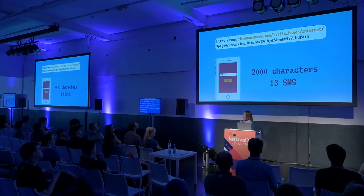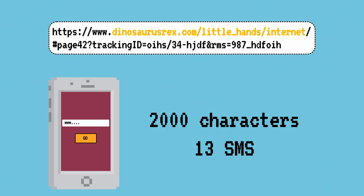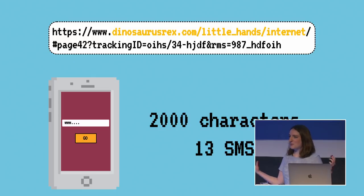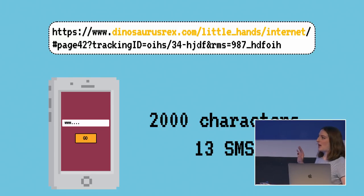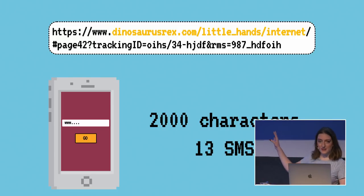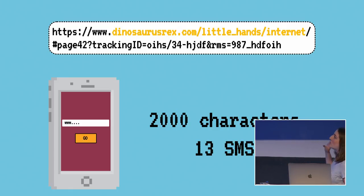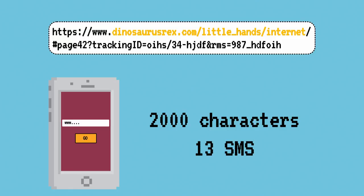Right off the bat, we get into a huge limitation with SMS because the URL spec says a URL can be 2,000 characters long — that could take up 13 SMS, which is already a lot more than we want. So the first thing we're going to do on the app side — and the app just looks like this: a text box and a go button, a very simple browser — is start by chopping off everything in the URL that we don't really need.